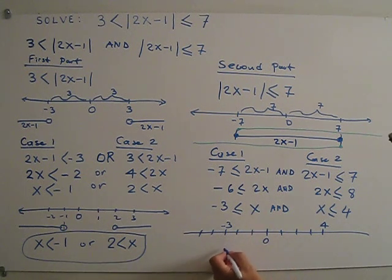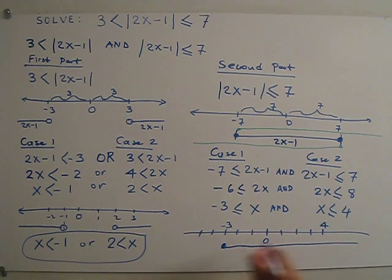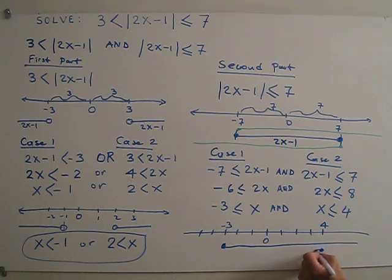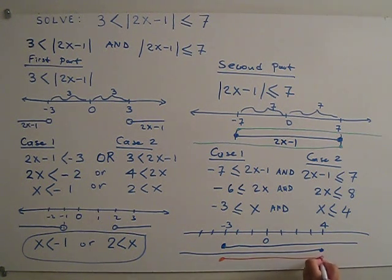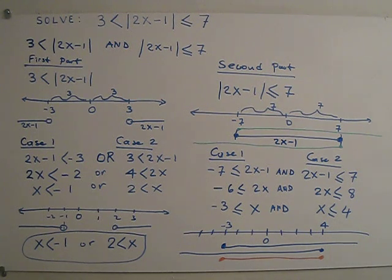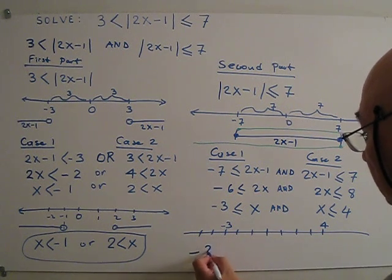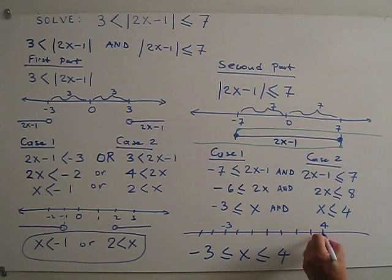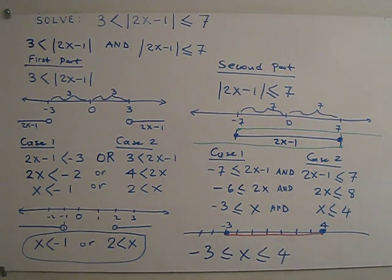On the number line: greater than or equal to negative 3 going up, and less than or equal to positive 4. This is the intersection because we use 'and'. The final result for the second part is negative 3 less than or equal to x less than or equal to 4.